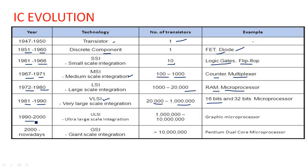From 1990 onwards, ULSI — Ultra Large Scale Integration — came into existence with 1 million to 10 million transistors, using which we can create graphic microprocessors. Currently we use Giant Scale Integration with greater than 10 million transistors fabricated on a single silicon chip, used for Pentium, dual-core, and high-core processors. This is the IC evolution table showing transistor counts and examples for each stage.